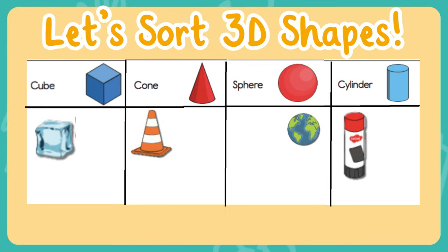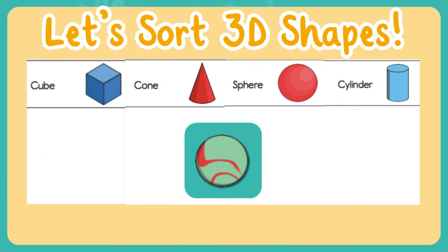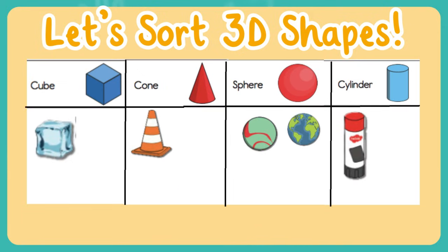This is a marble. What kind of 3D shape is a marble? That's right, it's a sphere — it's perfectly round.